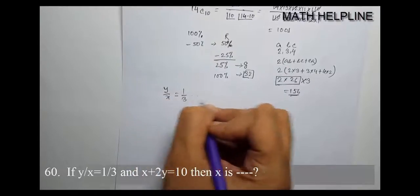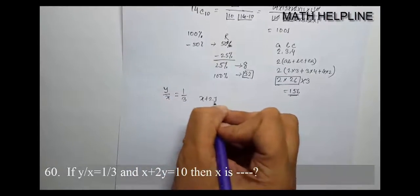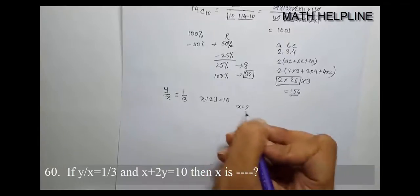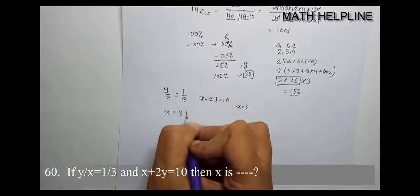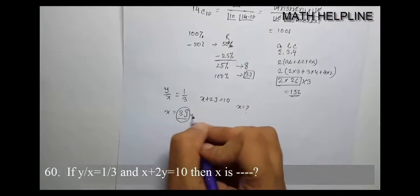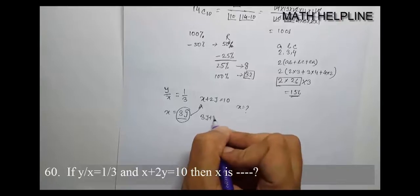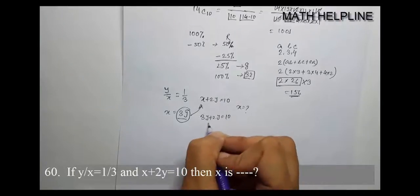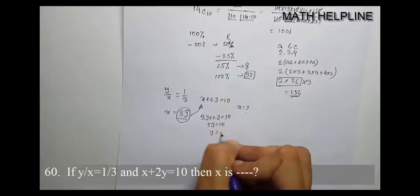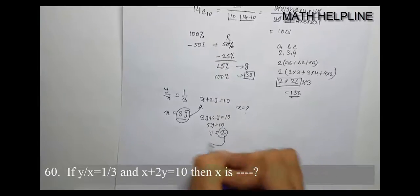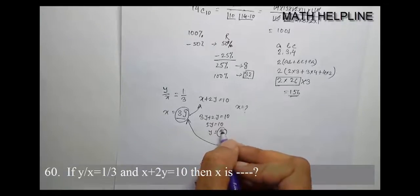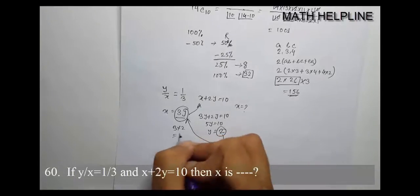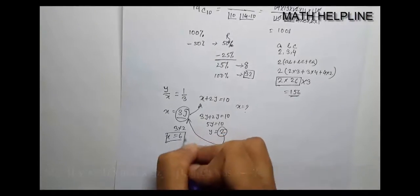Next: y by x equals 1 by 3, x plus 2y equals 10, x equals what? From the first equation, x equals 3y. Substituting into the second equation: 3y plus 2y equals 10, so 5y equals 10, y equals 2. Therefore x equals 3 times 2 equals 6. The answer is x equals 6.